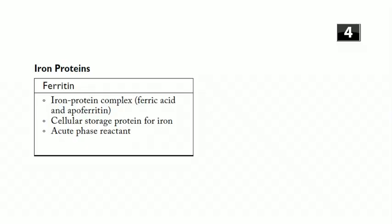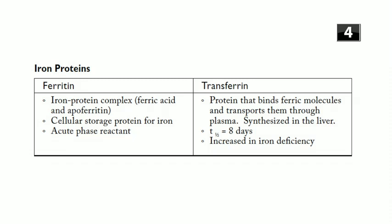An increased serum ferritin level can be a sign of inflammation or infection. Transferrin is a protein synthesized by the liver that binds ferric molecules and transports them through the plasma — it's the transport protein. Its half-life is about 8 days. In iron deficiency, transferrin is increased because cells are hungry for iron, but since no iron is available, the total iron-binding capacity is very high.